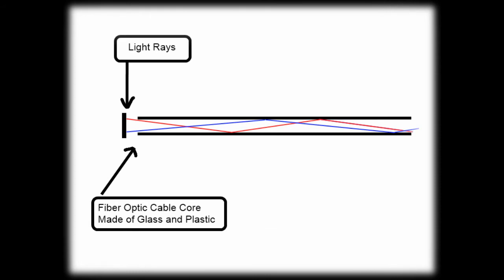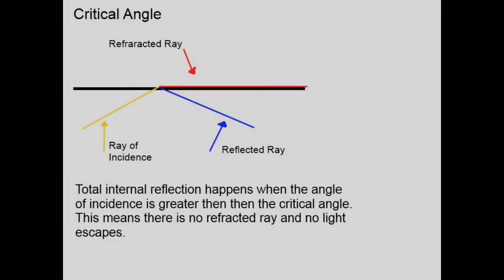Light rays shoot down the glass tube. When it hits the side of the tube, it uses internal reflection to keep going. Internal reflection happens when the angle of incidence is larger than the critical angle.